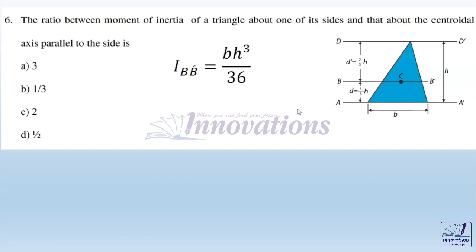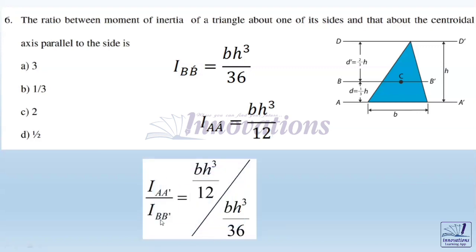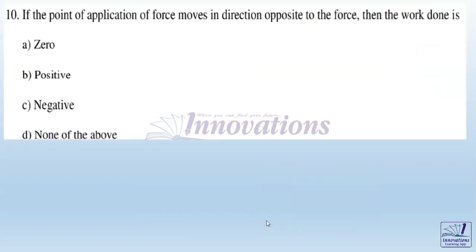The centroidal moment of inertia of a triangular shape I_BB dash is bh³/36, where b is the base and h is the height. The moment of inertia about its base which is parallel to the centroidal axis I_AA dash is bh³/12. So I_AA dash divided by I_BB dash equals bh³/12 divided by bh³/36, which gives us 36 by 12, that is 3. The answer is 3.